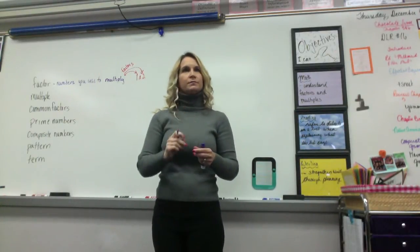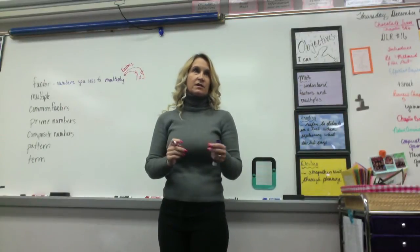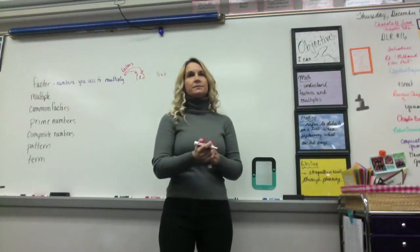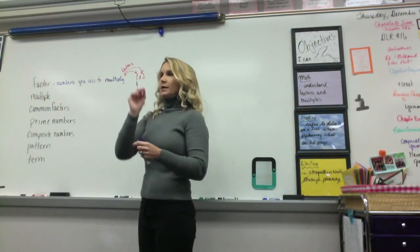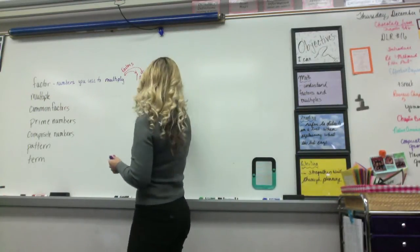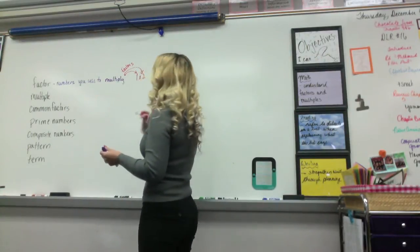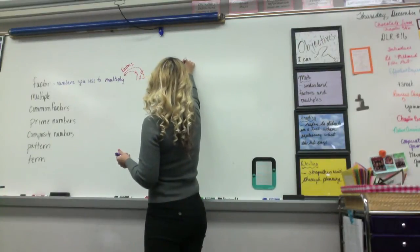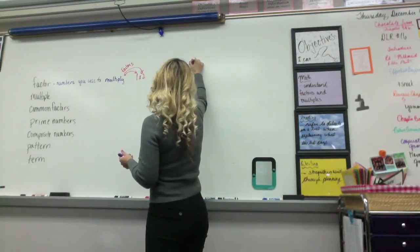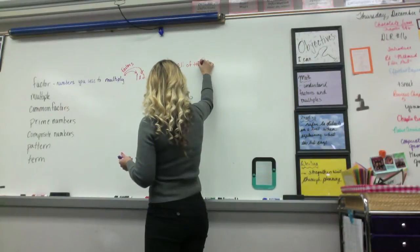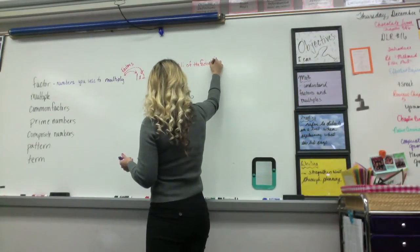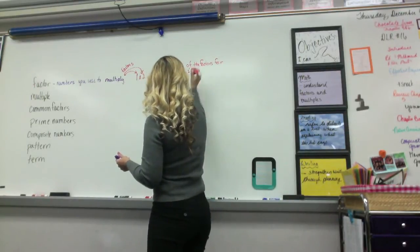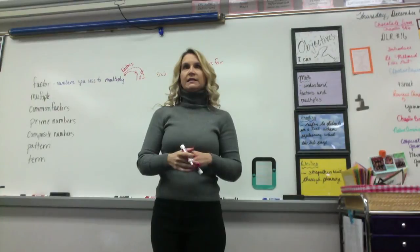Five and six — so multiplying? Five times six, those would be factors. Eight times six. So there's a bunch of different numbers we can do. What about making sure that you include the sentence like, all of the factors for 18? What are all of the factors for 18?